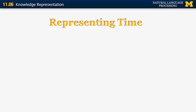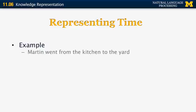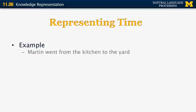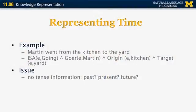Now let's look at ways to represent time. We want to be able to say 'Martin went from the kitchen to the yard'. One possible way is: there is an event e, where e is an instance of a going event. Going takes three arguments: a goer, an origin, and a target. The goer is Martin, the origin of e is kitchen, and the target is yard. However, this representation doesn't take into account anything about time — we cannot say that the going happened in a particular order, and it gives us no information whether the sentence is in the present, past, or future.